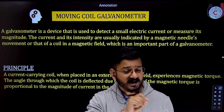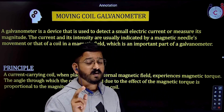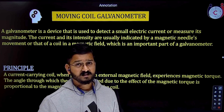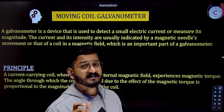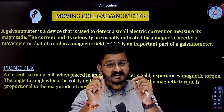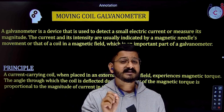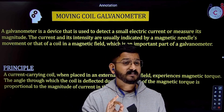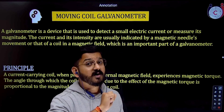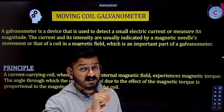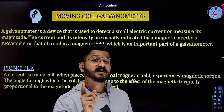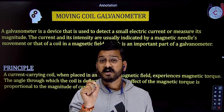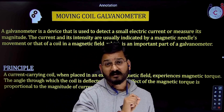The principle of the moving coil galvanometer is that the moment a current-carrying coil is placed in a strong magnetic field, it experiences a torque. That torque is responsible for moving the pointer according to the amount of current flowing through the galvanometer.